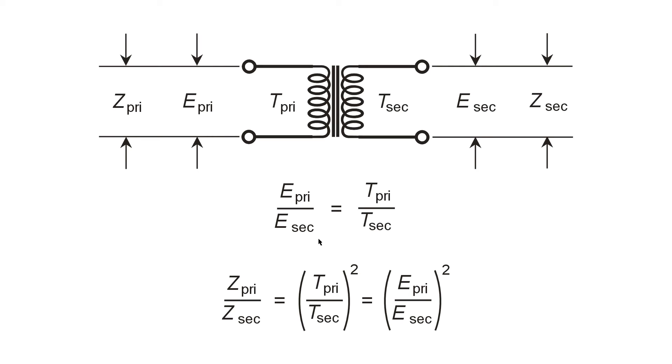Or, you might get an impedance transformation ratio of 16 to 1. So 100 to 400, 100 to 1600. So 100 ohms primary, 1600 ohms secondary.